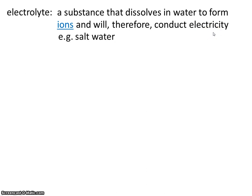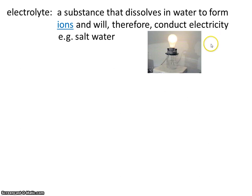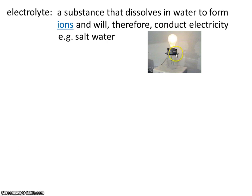Saltwater, for example, would be an electrolyte solution. Here we have a conductivity tester with two leads sticking into the solution that will pass current through it. If current is able to pass through the solution, it should complete the circuit and the light bulb should light up. So an electrolyte solution will conduct electricity.